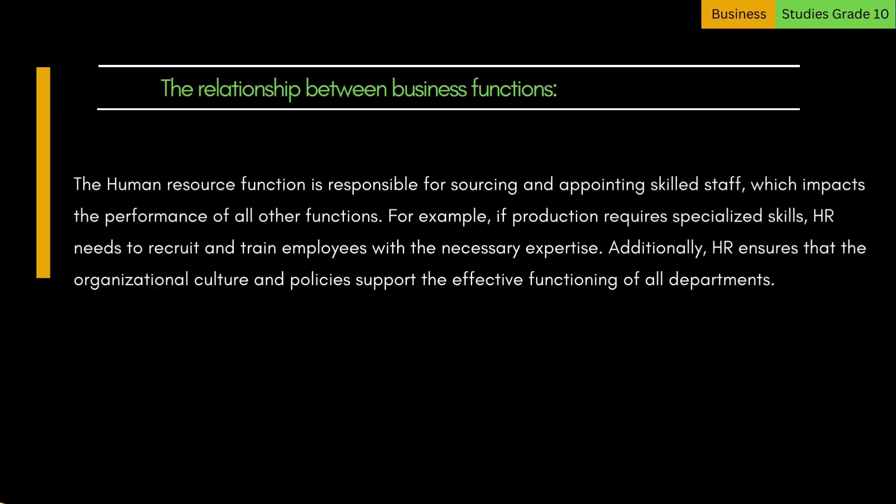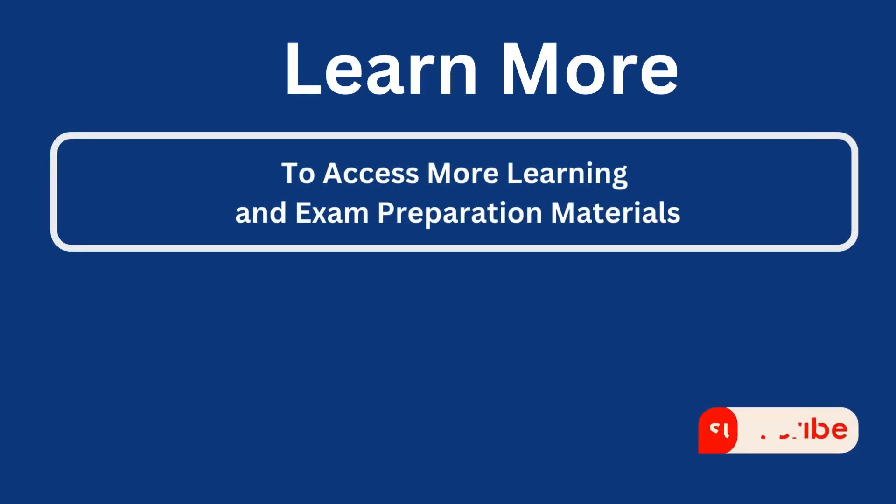The human resource function is responsible for sourcing and appointing skilled staff, which impacts the performance of all other functions. For example, if production requires specialized skills, HR needs to recruit and train employees with the necessary expertise. Additionally, HR ensures that the organizational culture and policies support the effective functioning of all departments.